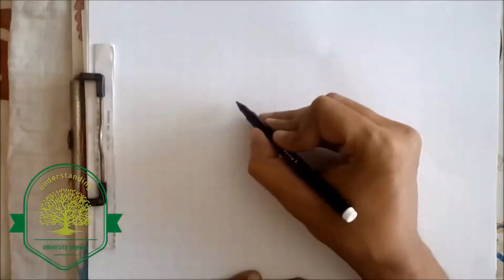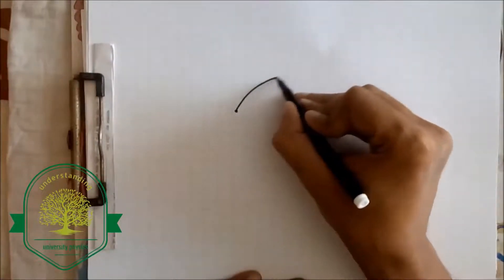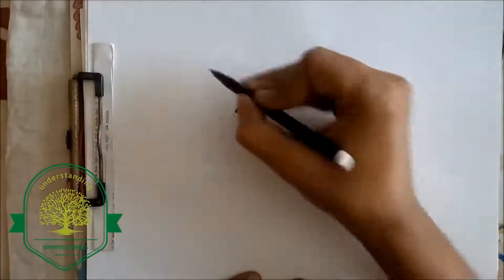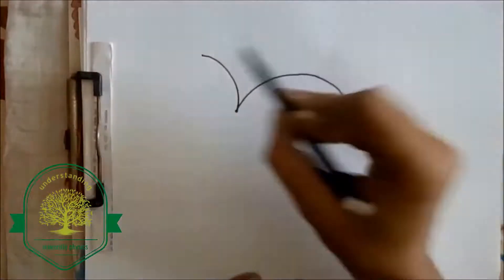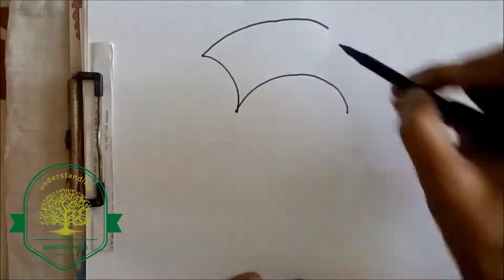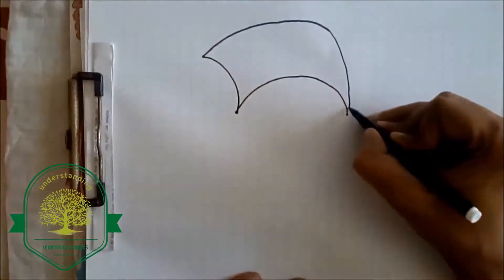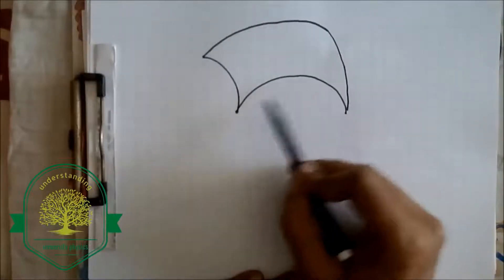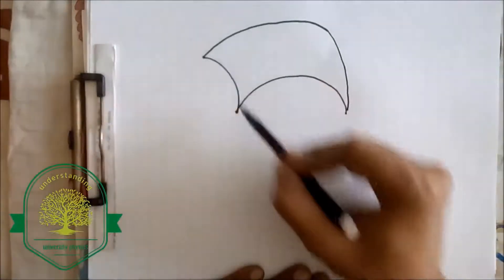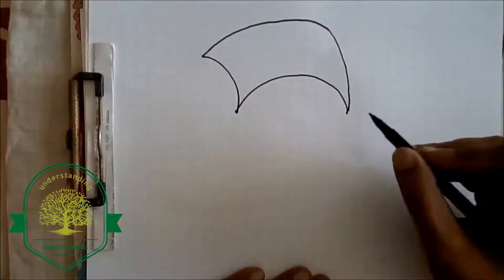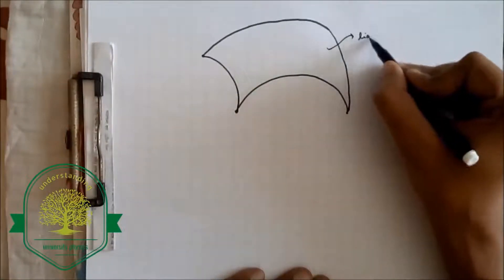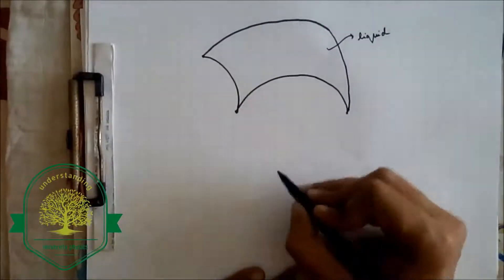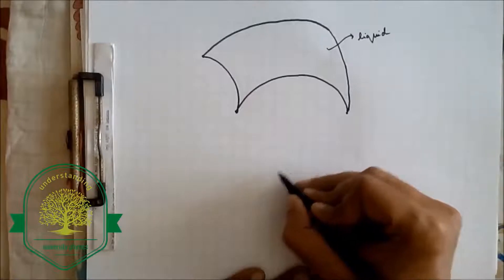In this video we'll try to figure out the excess pressure inside a surface having two different radii of curvature. Let our surface look like this — one side has a different radius of curvature, let's call that R1, and the other side has a different radius of curvature, let's call that R2.